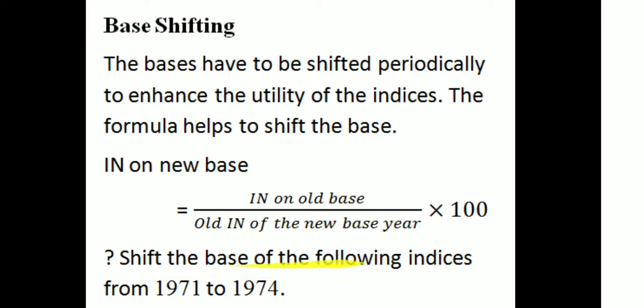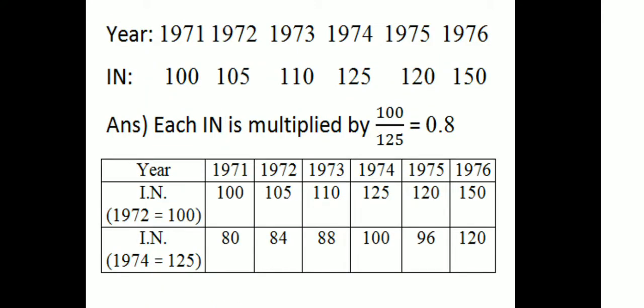An example: shift the base of the following index from 1971 to 1974. The years are 71, 72, 73, 74, 75, 76 with index numbers 100, 105, 110, 125, 120, 158 respectively. Each index number is multiplied by 100 divided by 125, giving new index numbers of 80, 84, 88, 100, 96, 120.